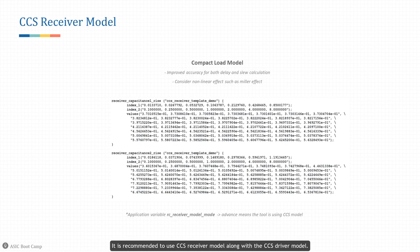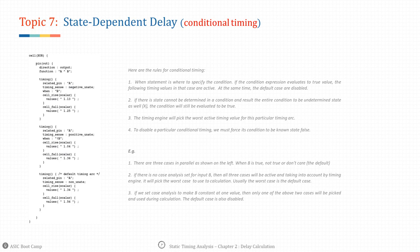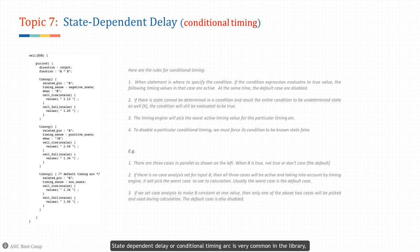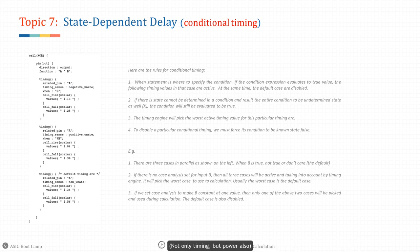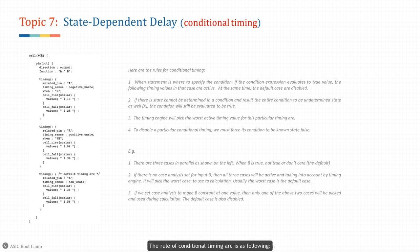State-dependent delay, or conditional timing arc, is very common in libraries, especially for logic gates with multiple inputs. The timing model for a particular timing arc could change depending on the other inputs of the cell. Sometimes people want to distinguish one case from the other since the timing behavior could be largely different — not only timing but power also. There are often several case descriptions for the same timing arc, one for each input combination and a default case.